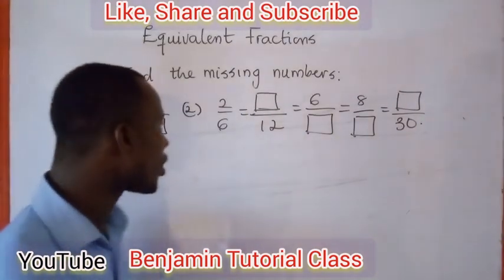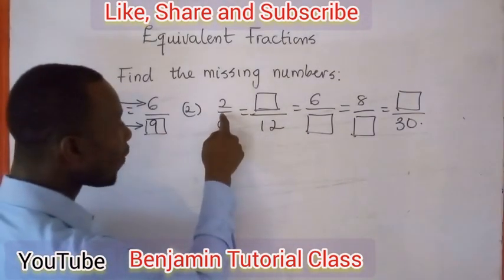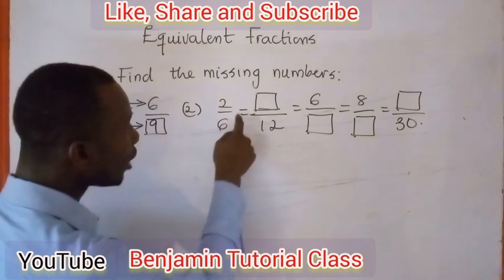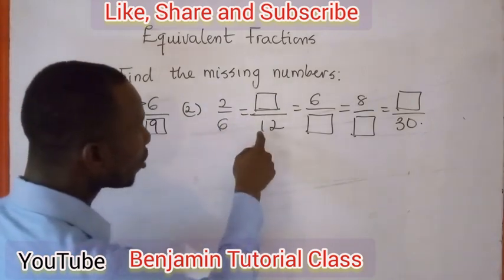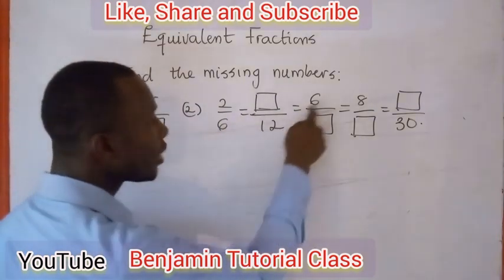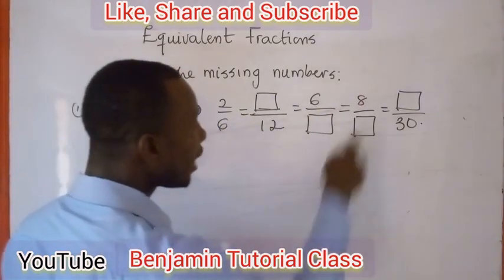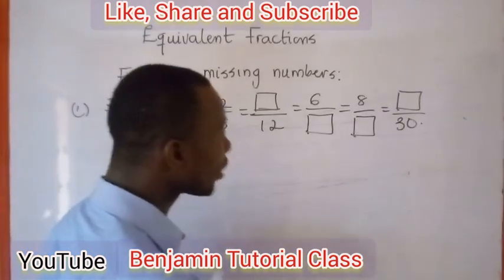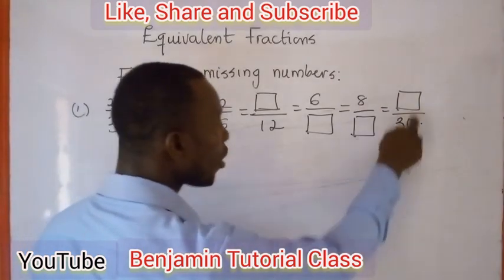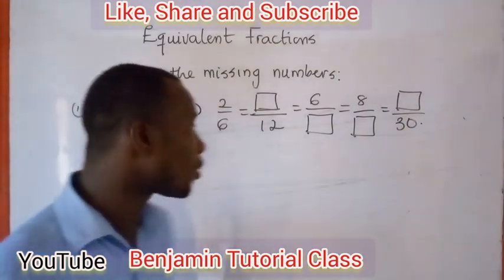Now let's consider the next question: 2 over 6 equals box over 12, equals 6 over box, equals 8 over box, and equals box over 30.